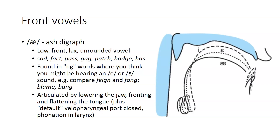The lowest of the front vowels is the A, referred to as the ash digraph. It is a low front, lax, unrounded vowel, found in words like sad, fact, pass, or gag. It's found in -ng-type words where you think you might be hearing an A or an E, so something like feign versus fang, blame versus bang — that is the A vowel, though its co-articulation with that nasal does make it harder to identify.